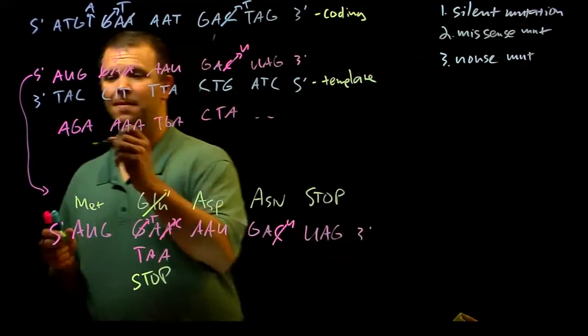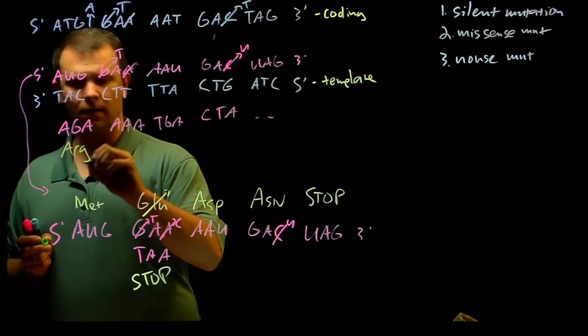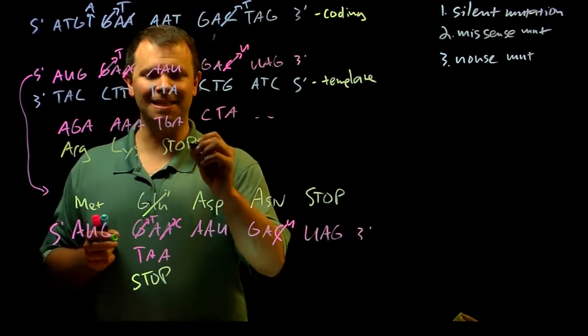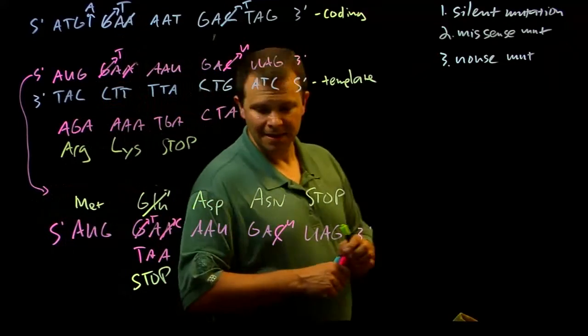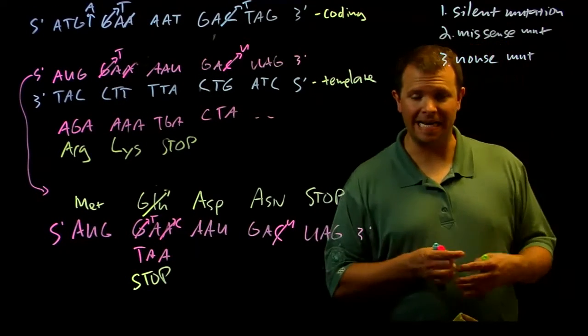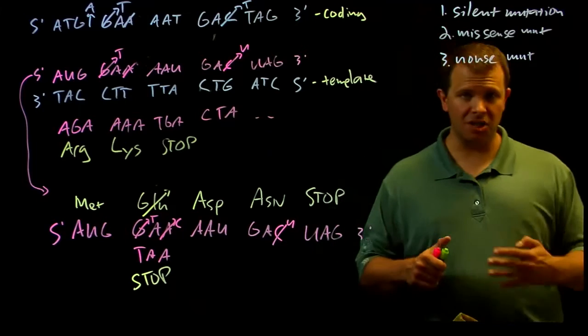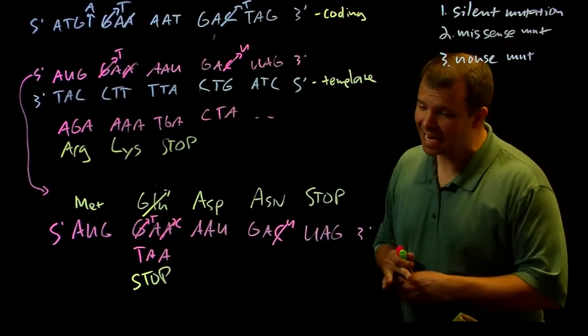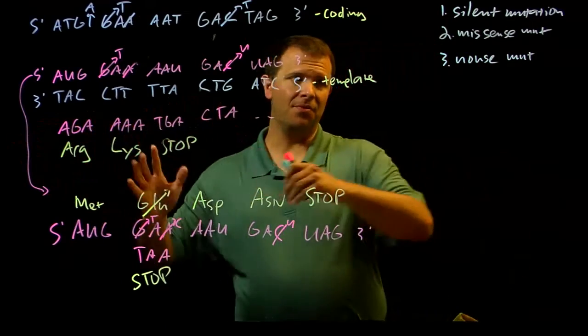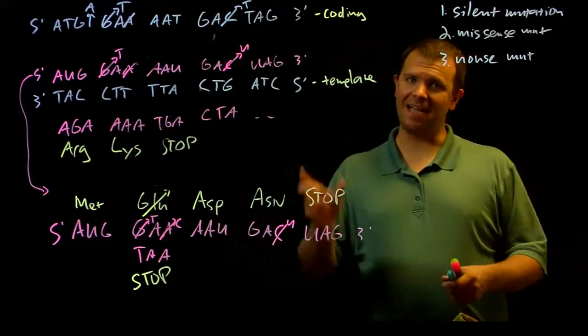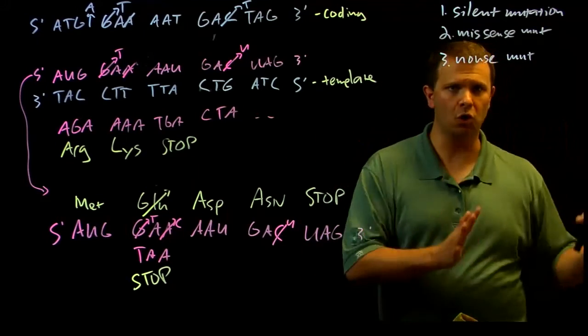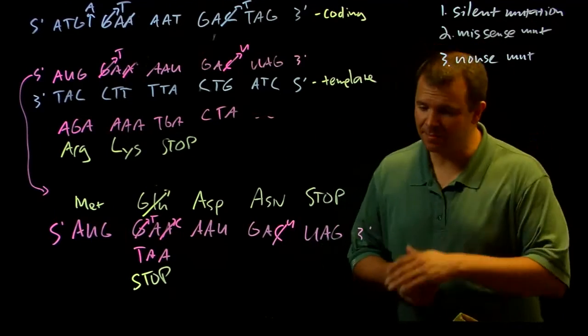I should note that now our amino acids are arginine, lysine, and a stop codon. So when I insert just a single nucleotide in a protein coding gene, it shifts the reading frame - that three base pair codon word, where those delimiters are.